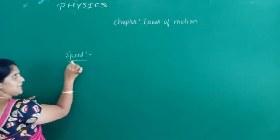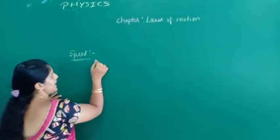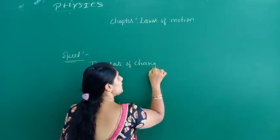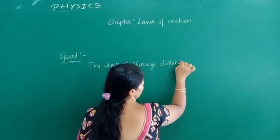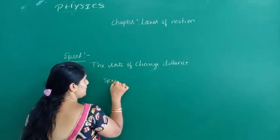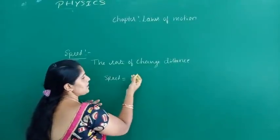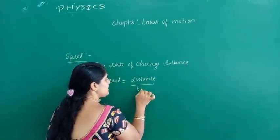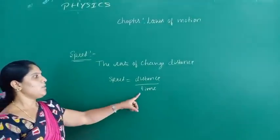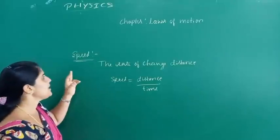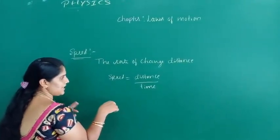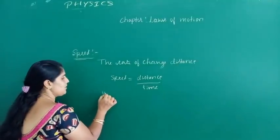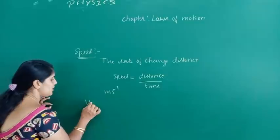Next we define speed. Speed is also a scalar quantity. Speed is defined as the rate of change of distance, that is speed equals distance divided by time. The SI unit of speed is meter per second.